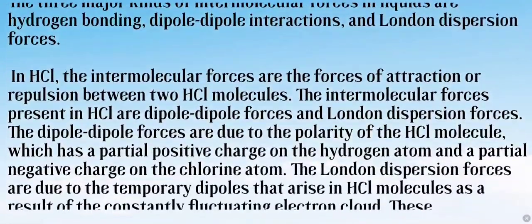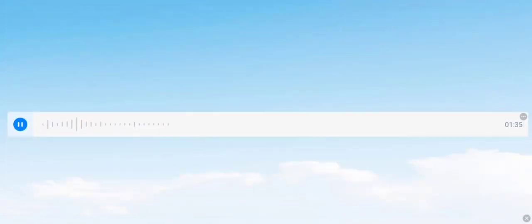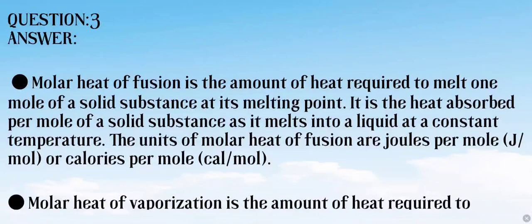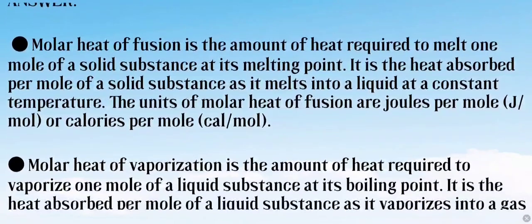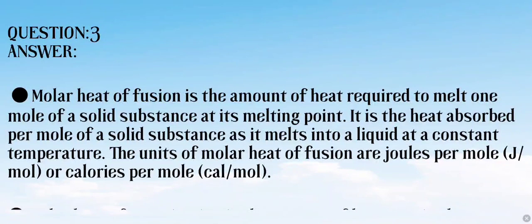So for hydrochloric acid we have two types of forces. Now we have the third question: define the following. First, molar heat of fusion — it is the amount of heat required to melt one mole of a solid substance at its melting point. It is the heat absorbed per mole of a solid substance as it melts into liquid at a constant temperature. The units of molar heat of fusion are joules per mole or calories per mole.